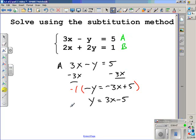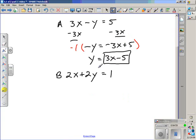So since we solved equation A, we'll need to substitute this result, the 3x - 5, into equation B. We'll be substituting that in for y. So writing the equation down with the substitution gives us 2x + 2(3x - 5) = 1. Now we need to simplify and solve this equation.